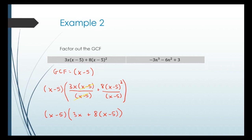It looks a little messy, but we've factored out the GCF. Usually we then simplify inside by distributing and combining like terms. Doing this mentally: 3x plus 8x is 11x, and 8 times negative 5 is minus 40. So the final result is (x minus 5) times (11x minus 40).